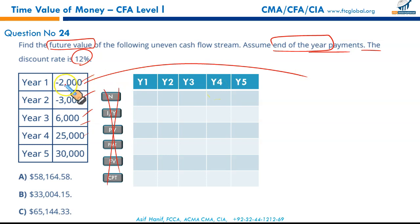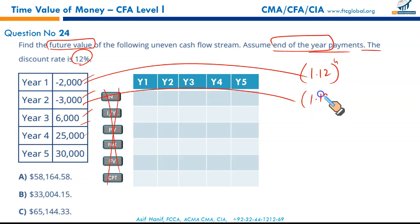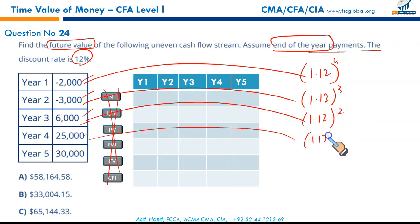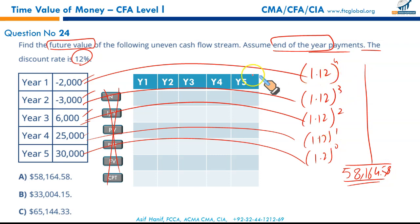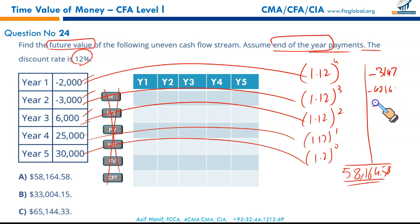Each cash flow is multiplied by 1.12 raised to the appropriate power: the year-one payment × 1.12⁴, the year-two payment × 1.12³, and so on. Note the first cash flow is negative: -$2,000 × 1.12⁴ gives a negative number. The others include -$3,000 × 1.12² as outflows, with the remaining cash flows positive. Summing these gives $58,164.58.